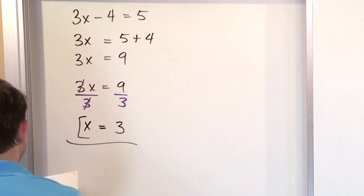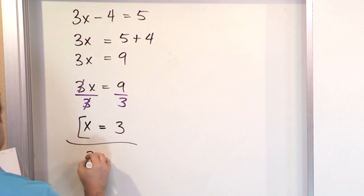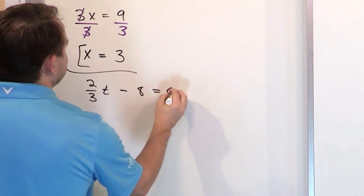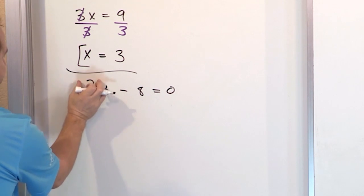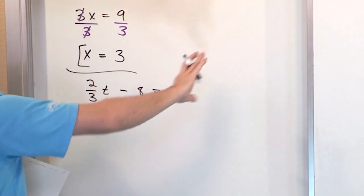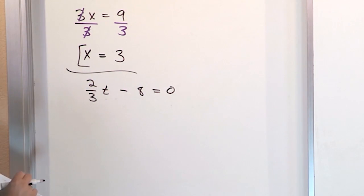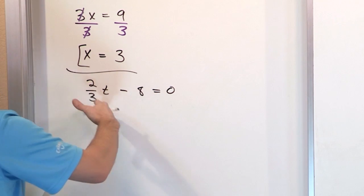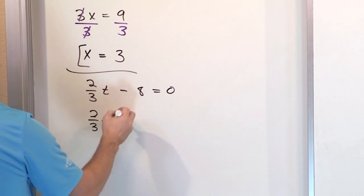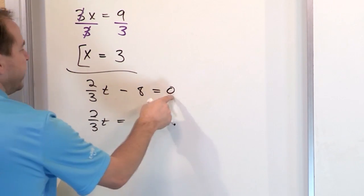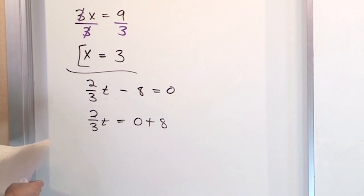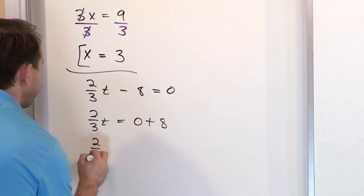Let's take another one. Say we have two-thirds t minus 8 equals 0. We have a fraction times the variable with a subtracted 8. The first thing we want to do is get everything else away from the variable term. Since this is subtracting 8, we do the opposite and add 8 to both sides, giving us two-thirds t equals 8.